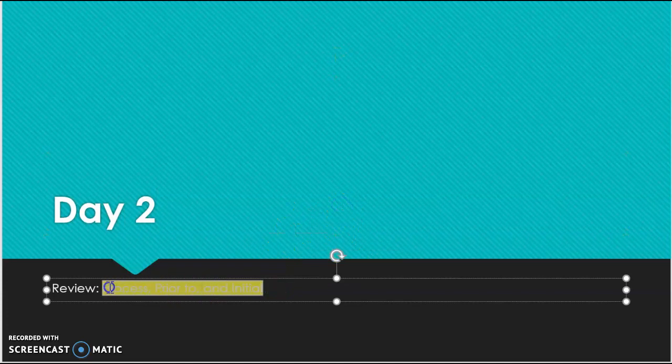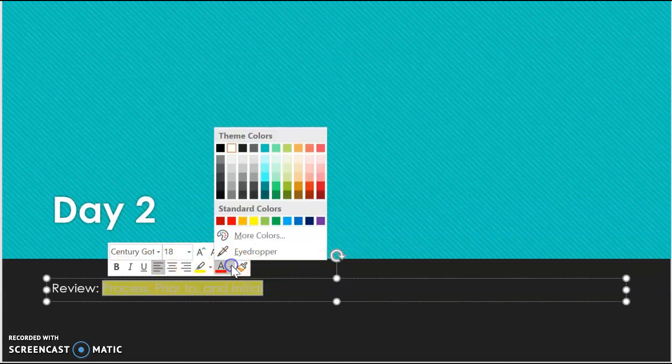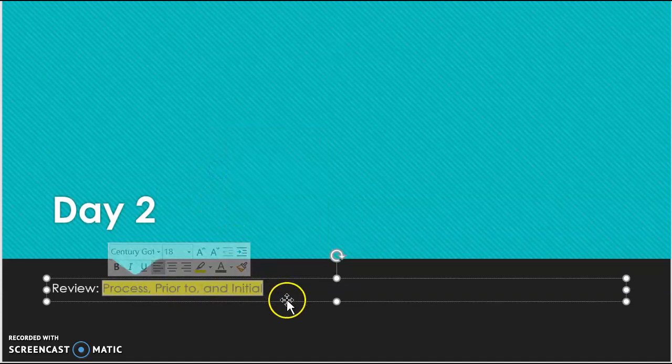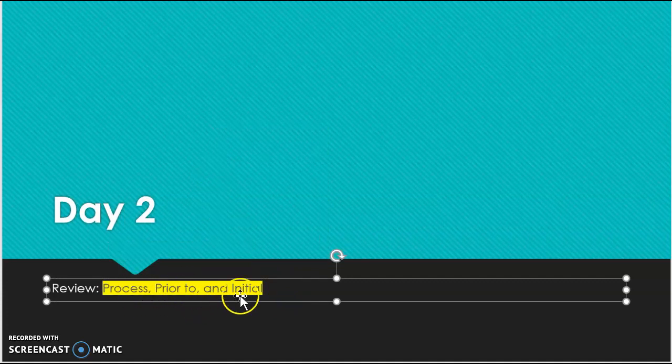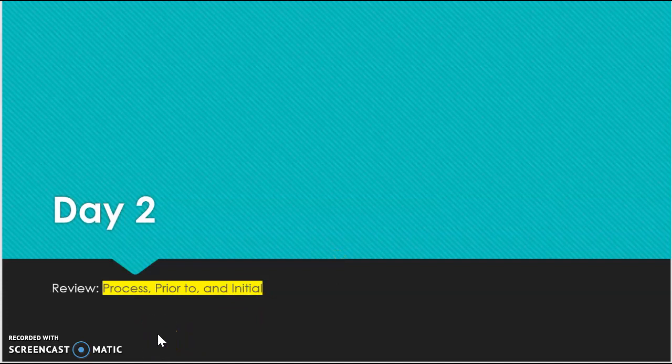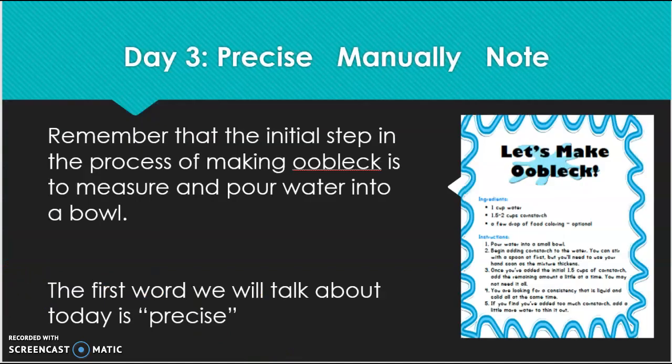What I would like for you to do today is write each of these three vocabulary words in a complete sentence. I know that today's vocab video is kind of short. I want you to write a sentence using the word process, a sentence using the word prior to, and a sentence using the word initial. That wraps up Day 2. See you back tomorrow for Day 3.